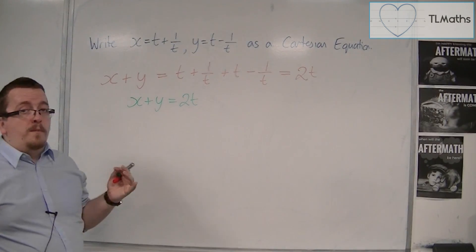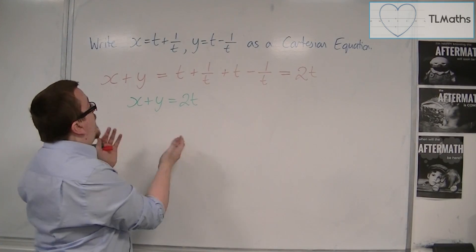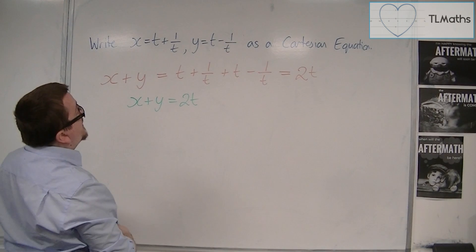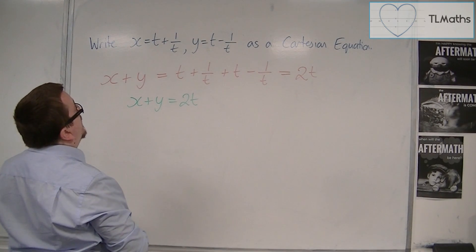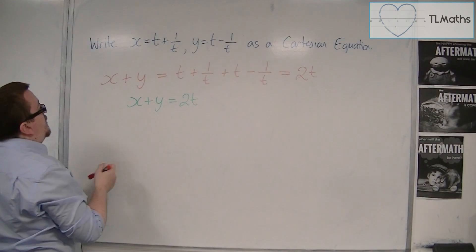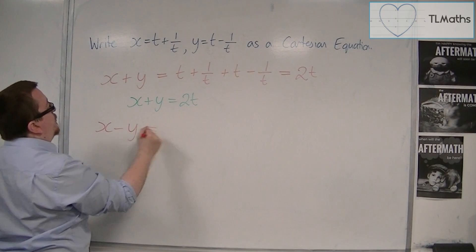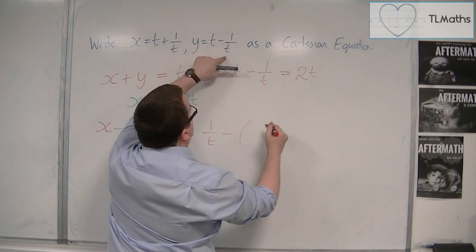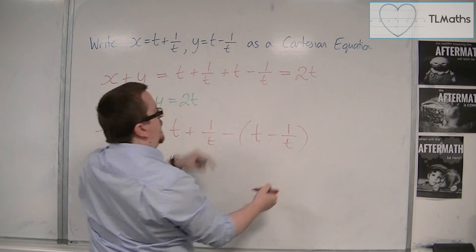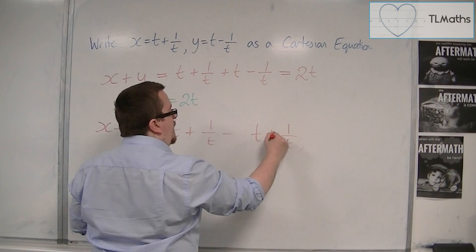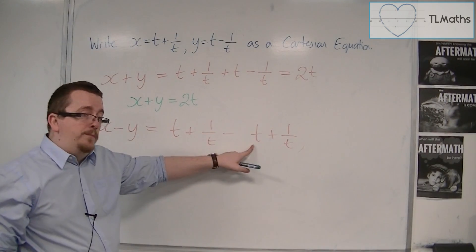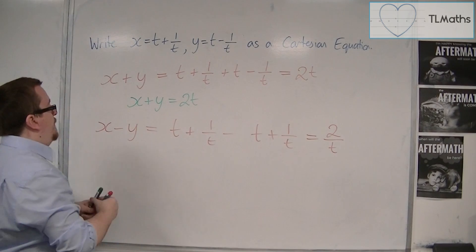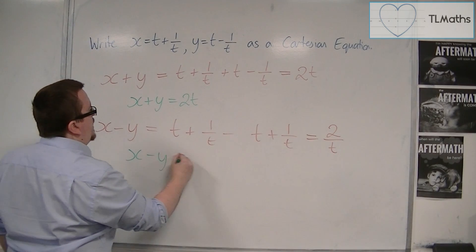Now, I haven't solved the problem here because I still have a single equation with an x or y and a t in it — it still has that parameter in it. So if I look back at the two equations again, maybe there's a way of now eliminating the single t's. What I could do is get x minus y — subtract y from x. So x take away t plus 1 over t, take away t minus 1 over t. I can get rid of that bracket, the two t's cancel, and I've got 1 over t plus 1 over t, which is 2 over t. So I now have x minus y equals 2 over t.